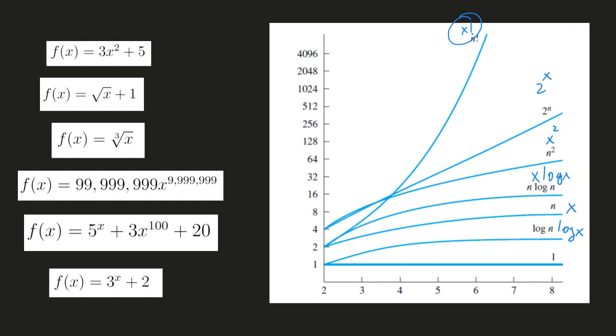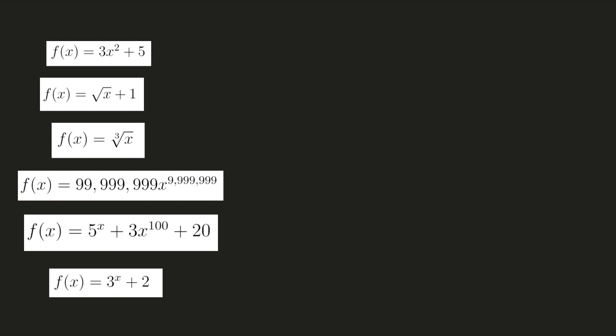Looking at this graph, this is something that you need to kind of have in your head: constant functions are the slowest, then log functions, then linear functions, then x times log of x, then we have polynomials, then exponentials, then factorials. So how can that help us arrange these functions in order?